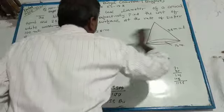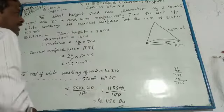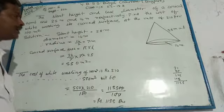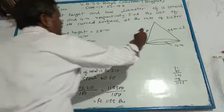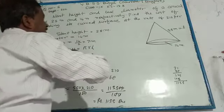This is a conical tent. The slant height is 25m. The diameter is 14m. The curved surface is whitewashing. How much money will be paid?